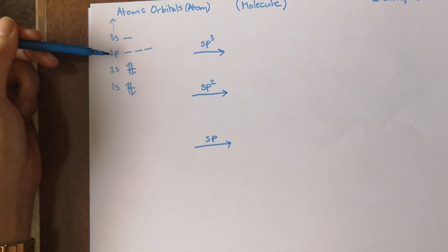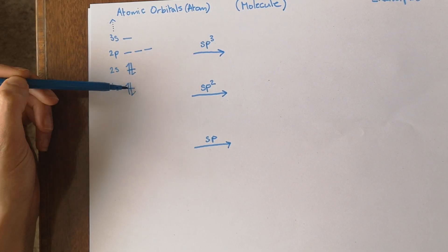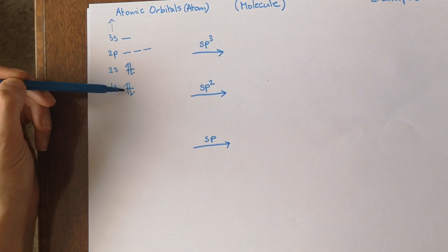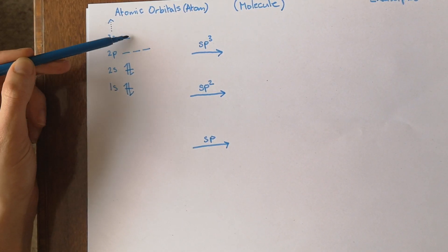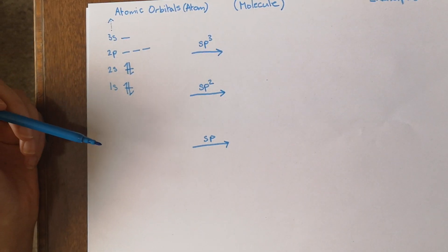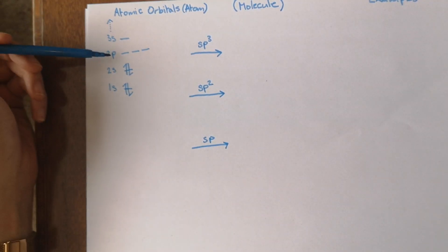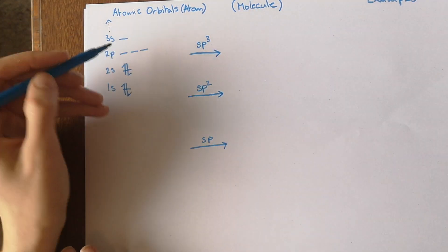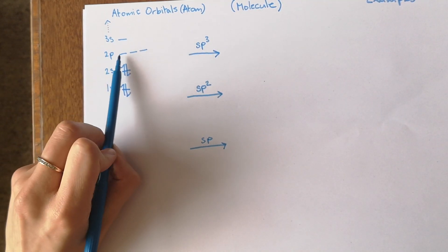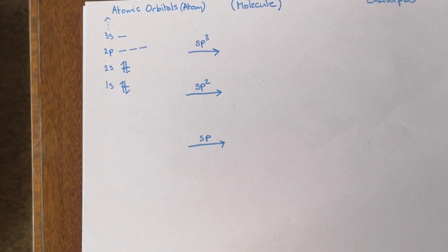When you get to p orbitals, they're a bit different because in the s subshell, there's only one orbital, no matter which shell you're on — 1, 2, or 3, there's only ever one orbital in the s subshell. But in the case of the p subshell — and d and f subshells, which you don't need to worry about right now — you end up having a lot more orbitals. In the case of p, you have three orbitals.